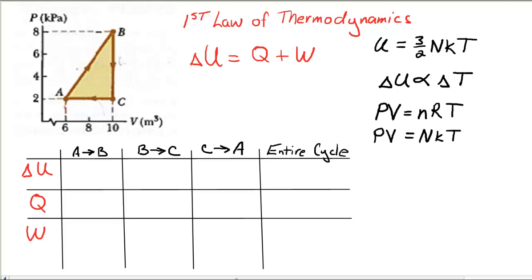Okay, for this question we're going to determine the sign of our delta U, Q, and W based on this PV process graph that we see in the diagram.